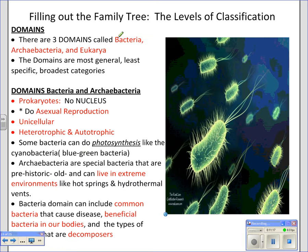We have three domains: Bacteria, Archaea, and Eukarya. The domains are the most general, least specific, and broadest categories. Under domain Bacteria you have the kingdom Eubacteria; under domain Archaea you have the kingdom Archaebacteria. Both of these are prokaryotes — they have no nucleus, reproduce asexually, are unicellular, and can be both heterotrophic and autotrophic. Believe it or not, bacteria are some of the most abundant kingdoms, living in all sorts of different habitats and eating every conceivable kind of food, including archaebacteria that consume toxic molecules.